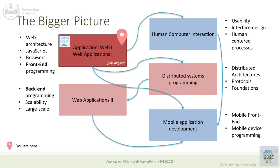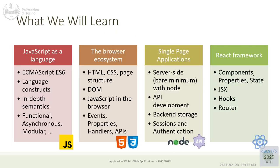Sometimes the integration is even more profound, with the same code base used for website and app. Progressive web applications package a website into a mobile app. Libraries like React Native use the same React framework but compile native mobile applications. Many design patterns are consistent between web and mobile, so you'll have plenty to keep yourself busy for the next two years.